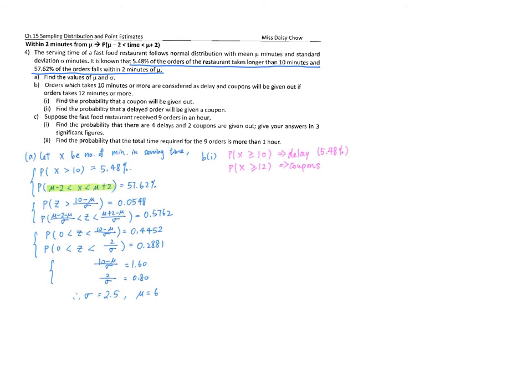Part B1 asks you for the probability of coupon given out, which means find P(X ≥ 12). We have the mean and SD, so we can convert X to standard normal distribution, then check the table to calculate the answer. You can try doing B2 yourself.